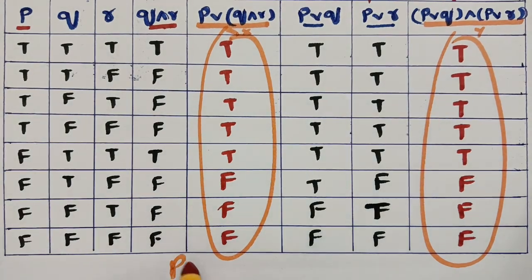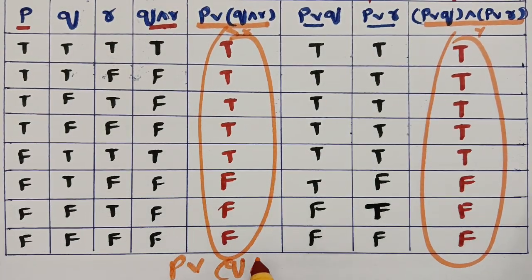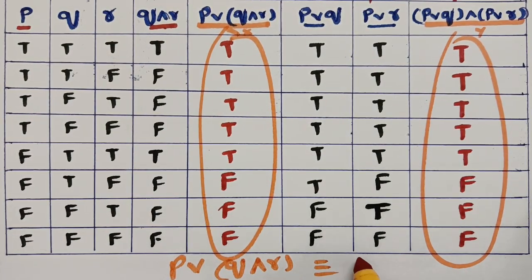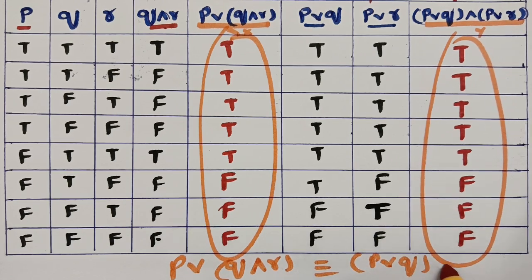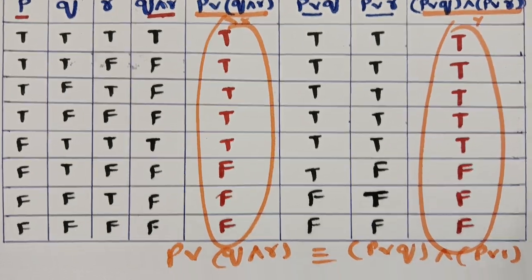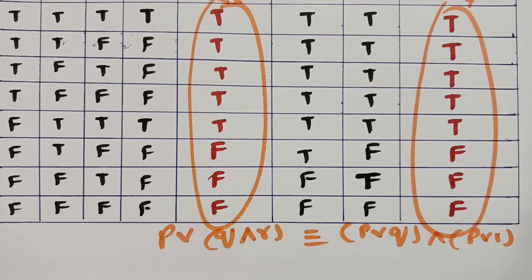Since the truth tables for x and y are identical, we conclude that p or (q and r) is equivalent to (p or q) and (p or r). This is how we show logical equivalence through truth tables in MFCS or mathematical logic. Please practice these problems and share them with your friends — subscribe to the channel and stay connected.